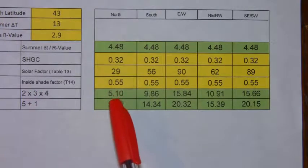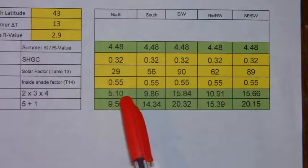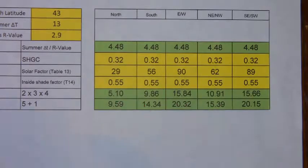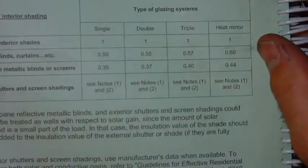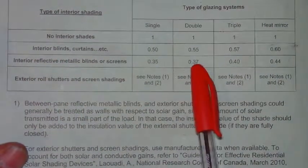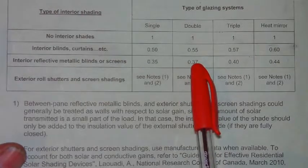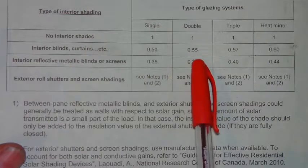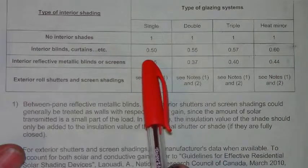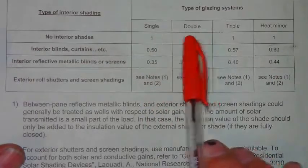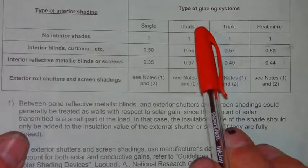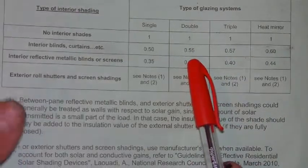The inside shade factor is determined by whether or not you have interior shading such as drapes or blinds. In our case, we have decided that we are using interior drapes or blinds. For a double glass window, the factor is 0.55. If you have no interior shading, then you would use 1. Note that the internal shading factor changes for different window types — single, double, triple. So in our case, we are using a double glass window, so you are going to use a value of 0.55.